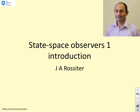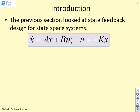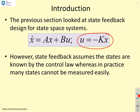This is the first video on state space observers. The previous section looked at state feedback — how we can determine a feedback control law u equals minus kx so that we get the closed-loop behaviour that we want. State feedback assumes that the states are known; it uses state information x, and therefore it was assumed that the states were available or could be measured easily.